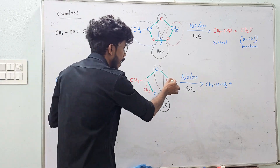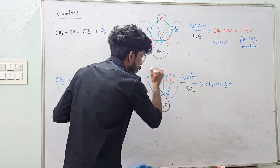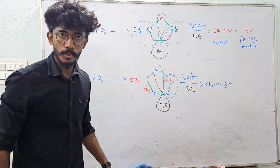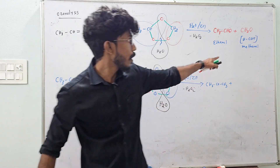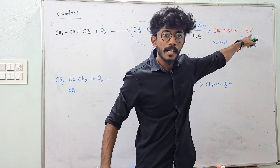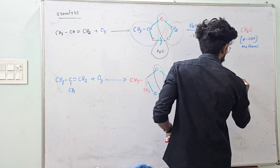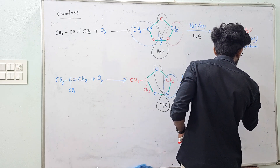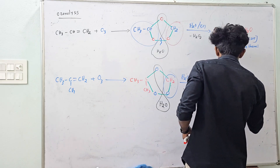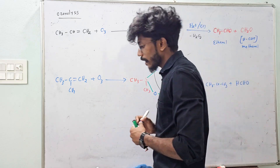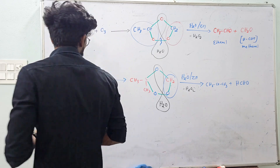The products are CH3COCH3 and CH2O, which is HCHO — formaldehyde. Is it clear?